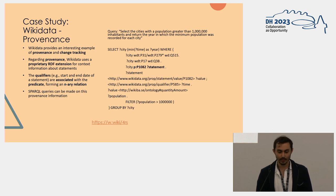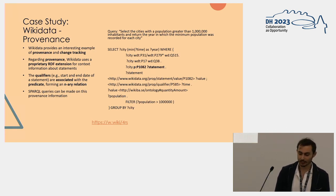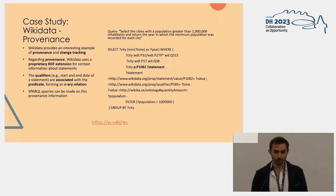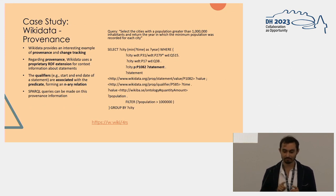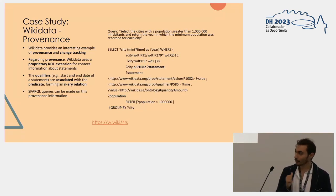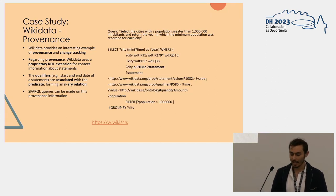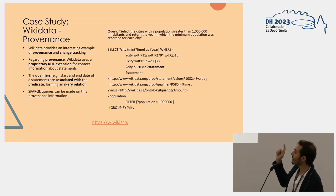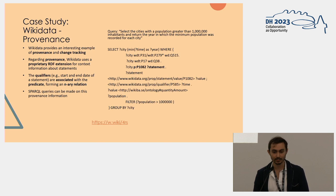I would like to discuss how Wikidata manages both provenance and change tracking, since this is quite interesting. Regarding provenance, the solution is a proprietary one, quite similar to N-ary relations — they reify the predicate and attach the object and also the provenance to it. The advantage is that you can make SPARQL queries on provenance in Wikidata. For example, you can get the year in which cities became greater than one million inhabitants — that year being provenance information, as it is the generation time of that statement.